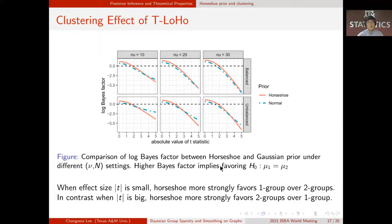When the effect size, which is an absolute value of t-statistic, is small, LoHo prior more strongly favors the single group over the separate groups in all scenarios. However, in contrast, when this effect size is big, LoHo prior more strongly favors separating the clusters compared to normal prior. This shows that LoHo prior can smooth out the cluster estimate when signal difference is minimal, while well-identified cluster when its signal difference is significant.